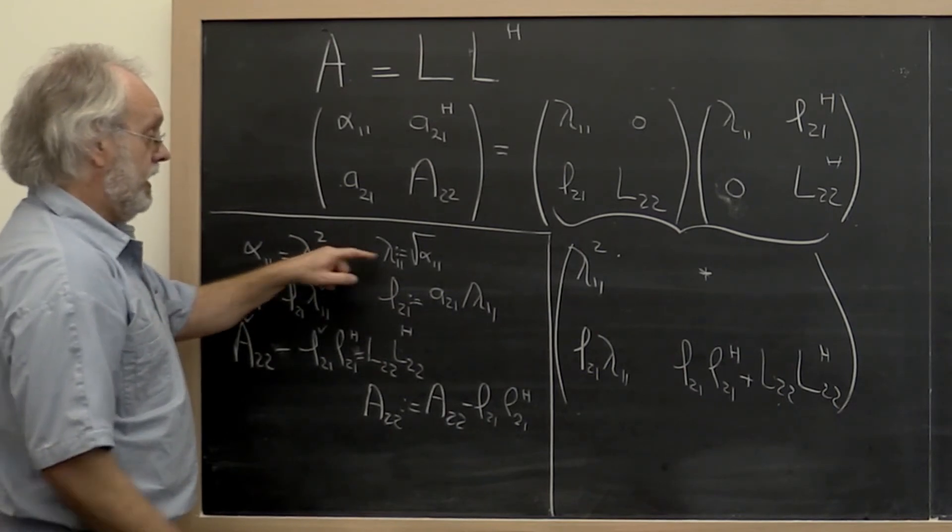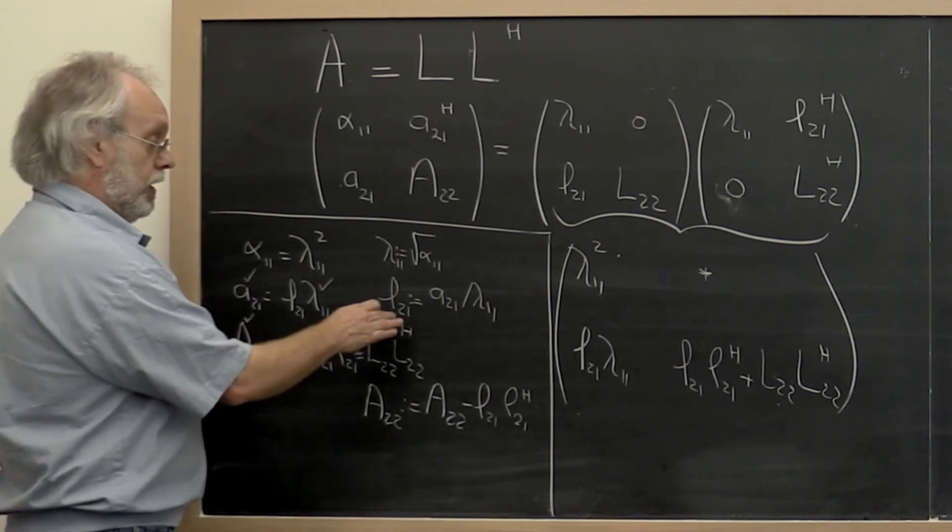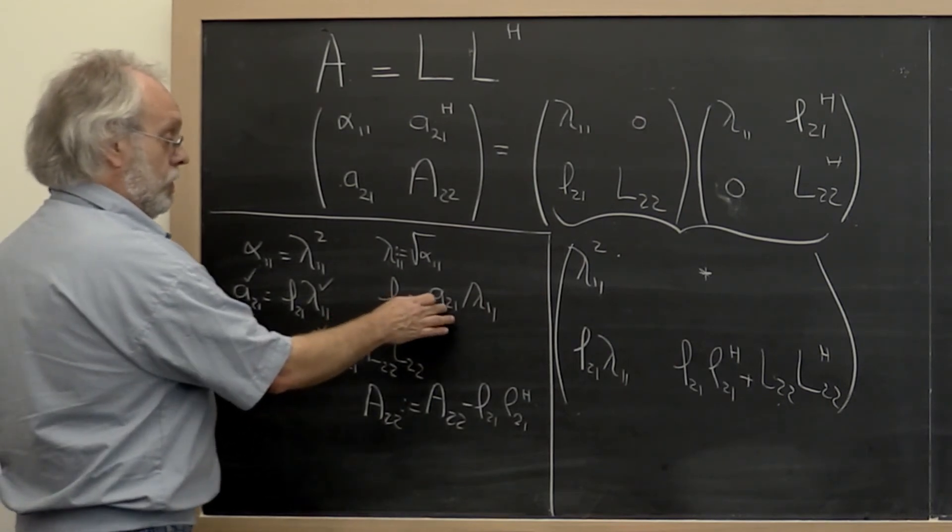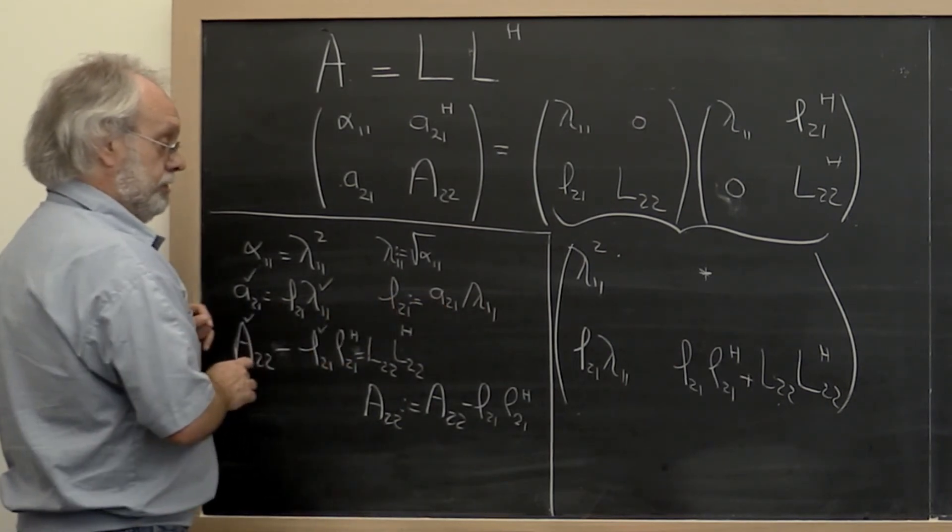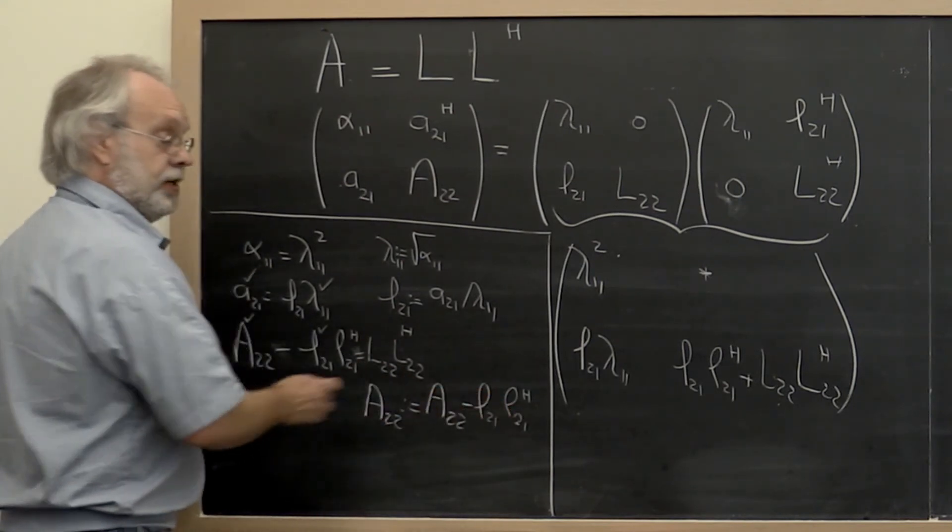Now notice that we can actually overwrite alpha_1,1 with lambda_1,1. We can overwrite A_2,1 with L_2,1. And we can overwrite A_2,2 with this updated matrix here.